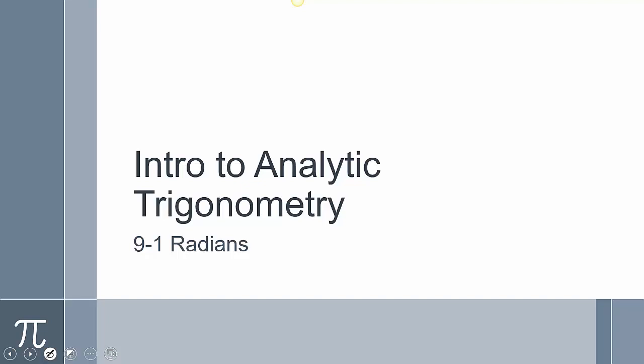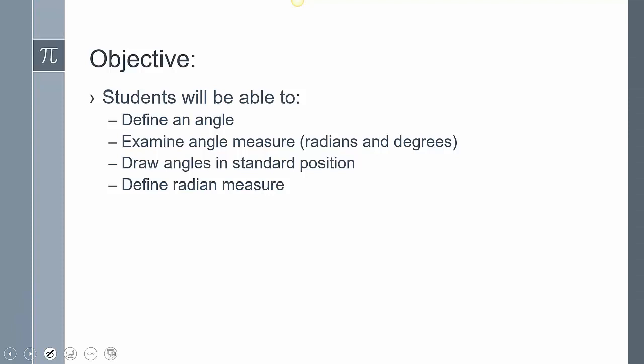New chapter — we're in 9-1. We're going to take a look at radians. We're going to define an angle, examine angle measure, draw angles in standard position — that's a key one — and then we're going to define what radians are, because we haven't seen these things called radians before. Nothing too complicated, but we're going to take a look at it.